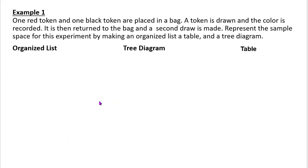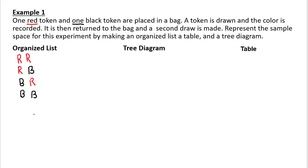Here's another example using a red and a black token. A token is drawn and its color recorded, then it is returned, and a second draw is made. For the organized list: first pull red, second red; first red, second black; first black, second red; first black, second black — very similar to heads and tails.